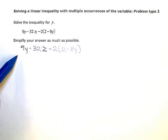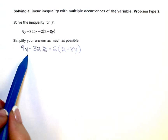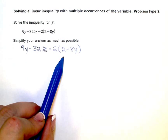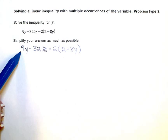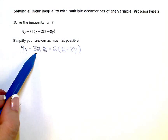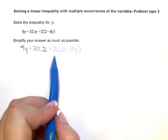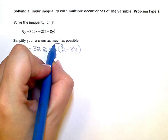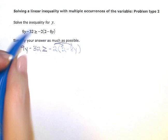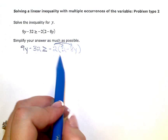Before I solve this, I need to look at each side of my inequality, the left side and the right side individually, and see if I can do anything to simplify. If I look at the left side here, I have 9y minus 32. They're not like terms - this term has a y and that term has no variable, it's a constant term. So I can't do anything to simplify on the left. But on the right, I have parentheses, so I can distribute or multiply this negative 2 across both terms inside the parentheses.